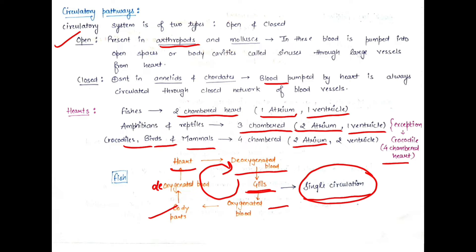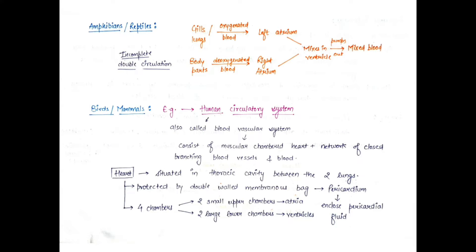In amphibians and reptiles, instead of gills the lungs are used. The lungs transfer oxygenated blood to the left atrium and the body parts transfer deoxygenated blood to the right atrium. Both the left and right atria empty into a single ventricle, where the blood gets mixed. Because the blood is mixed, this is called incomplete double circulation.